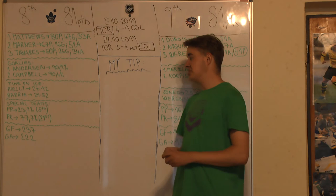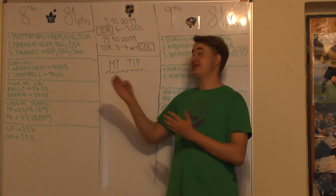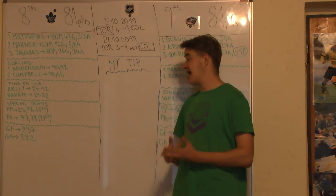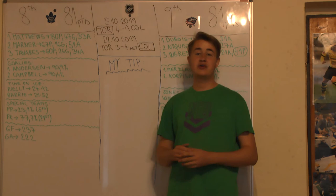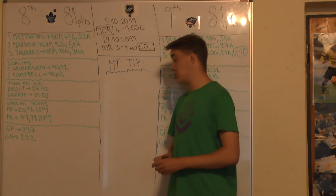Goals for 237. So Toronto, as you may expect, as I have said, with that offensive talent, with Tavares, Marner, Matthews, with Nylander, they have been scoring a heck of an amount of goals, 237. However, they also allowed a lot of goals, 222. So right now, let's move forward to Columbus' side of the ball.